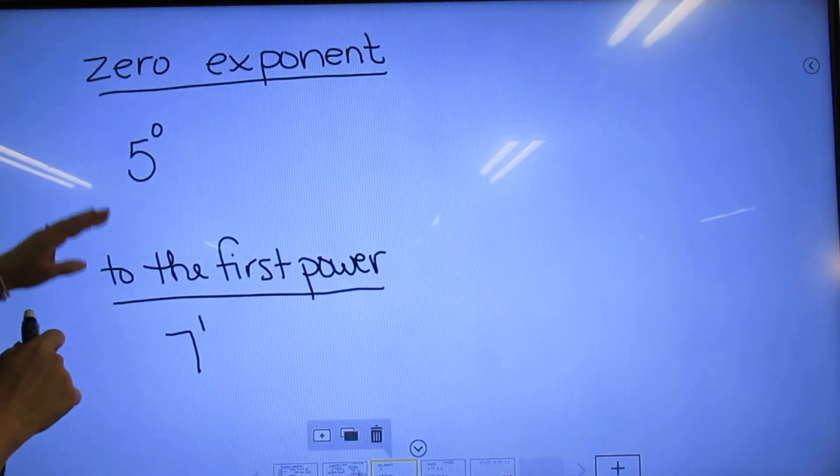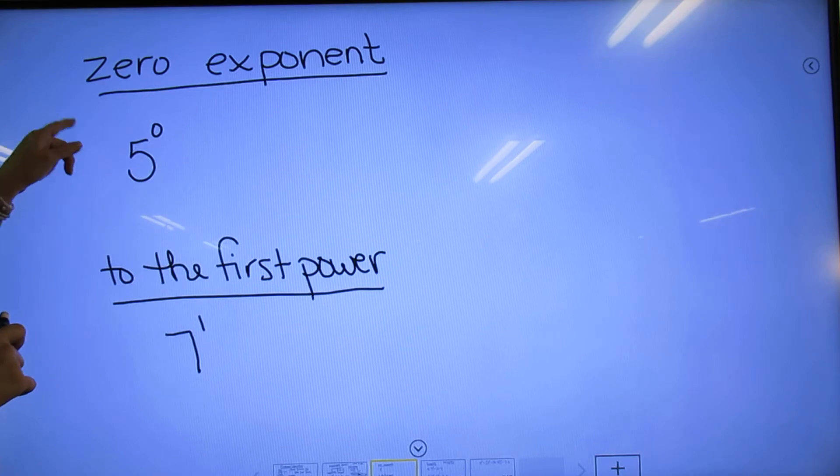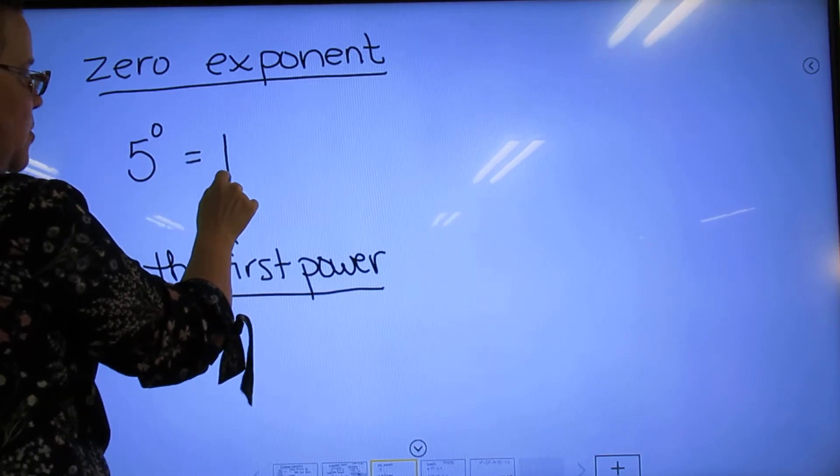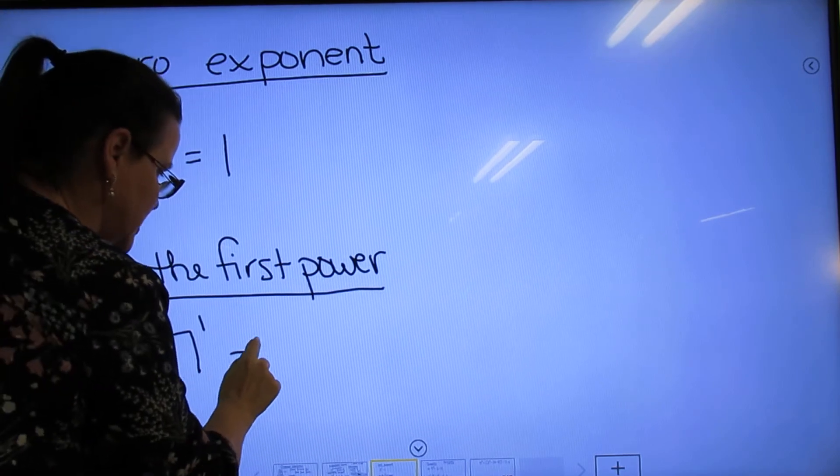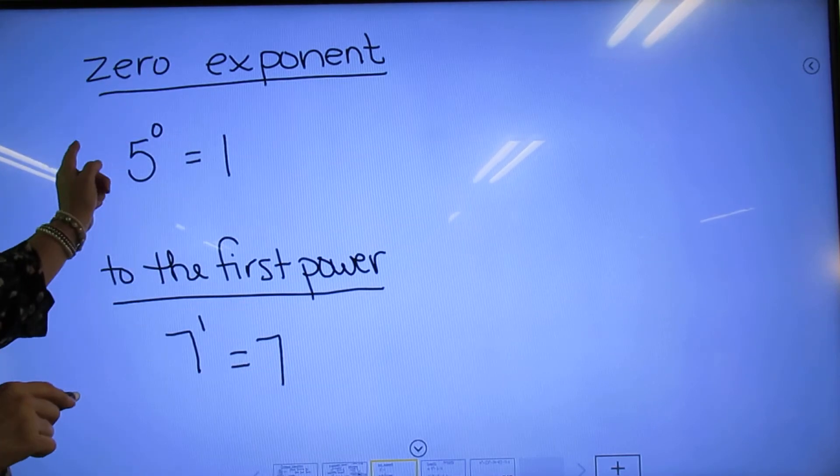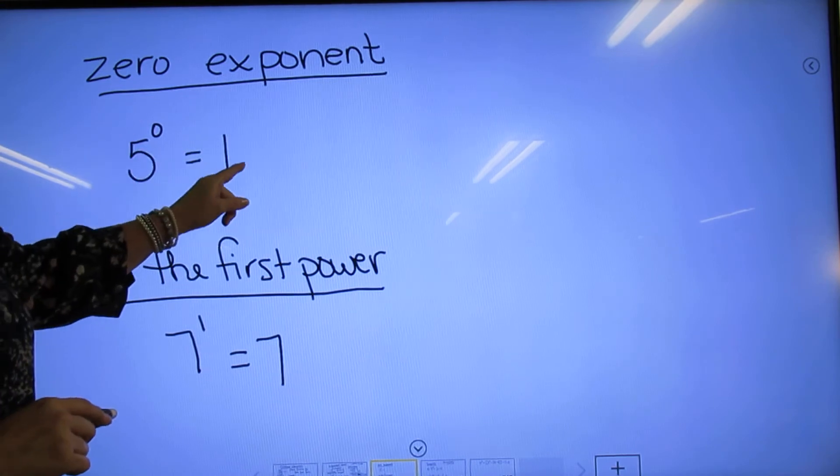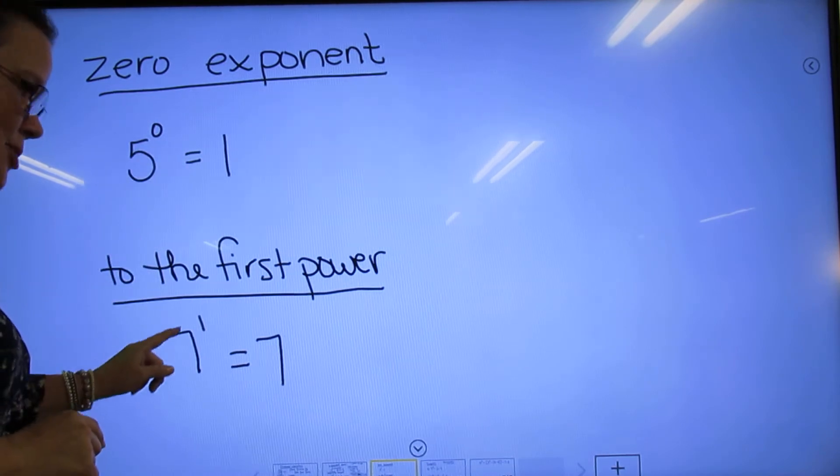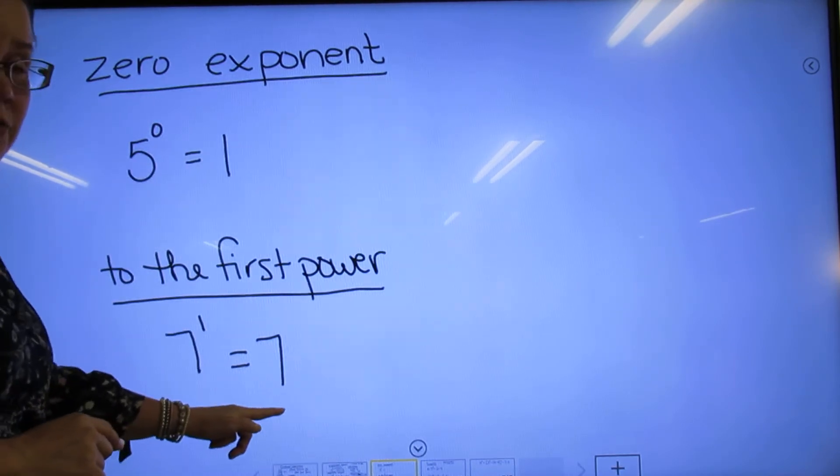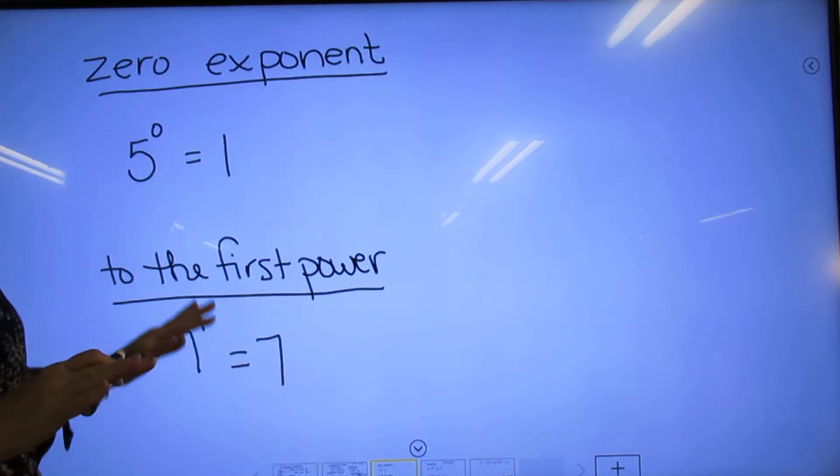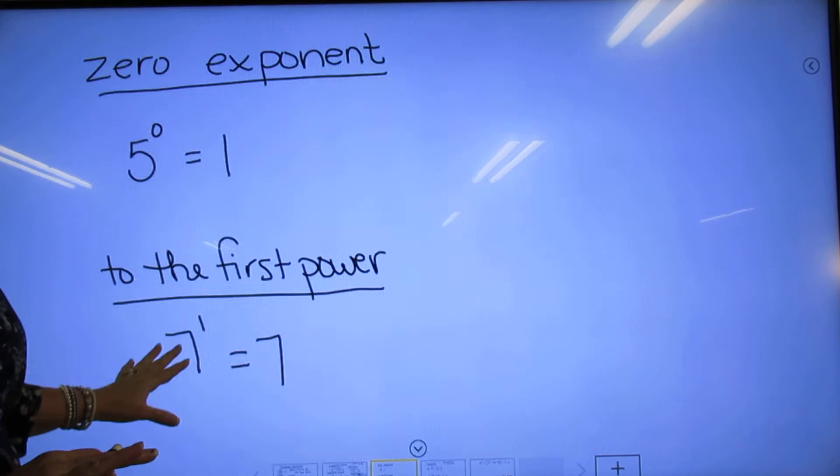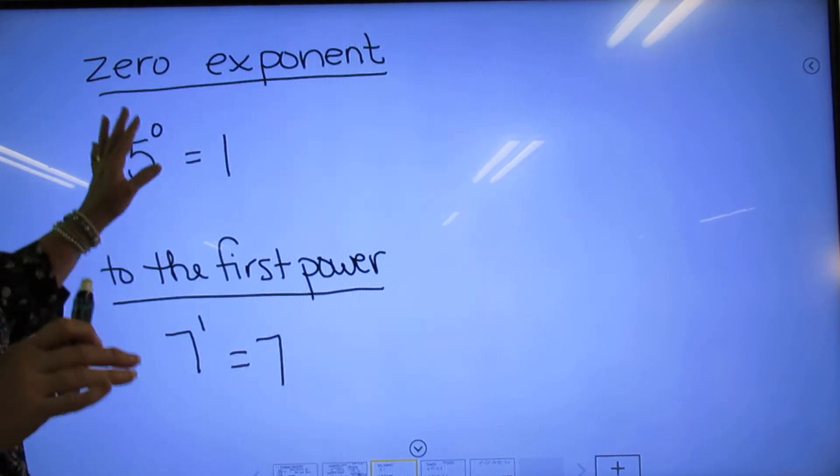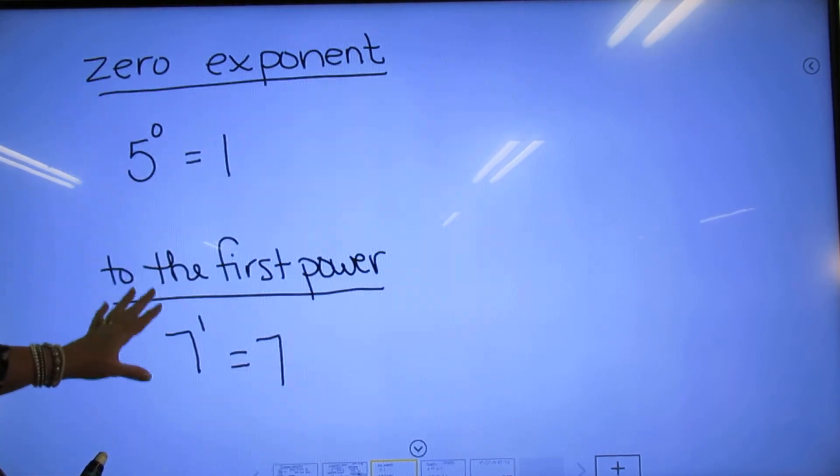So the next thing: zero exponent. Anything to the zero exponent is going to be 1, and anything to the first power is going to be itself. So 7 to the first power would just be 7. Quickly on that—when we get to polynomials and exponent rules, we'll go over these again with more explanation, but right now this is the quickest way to know that.